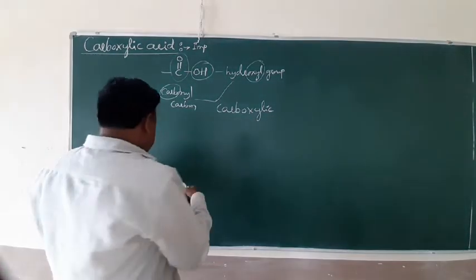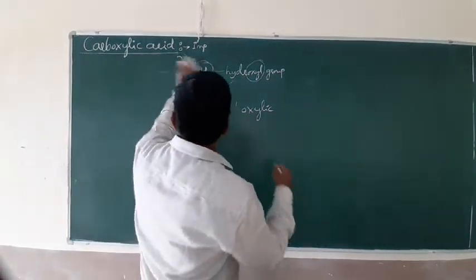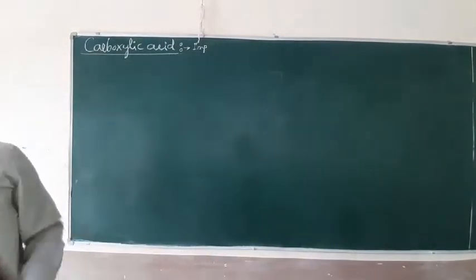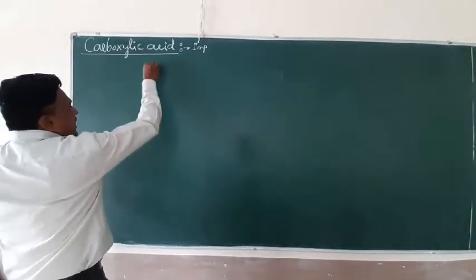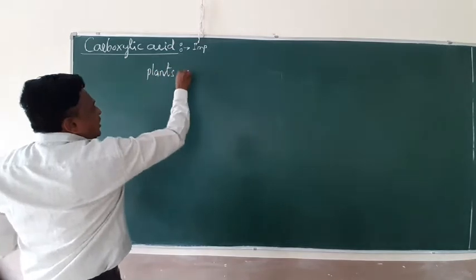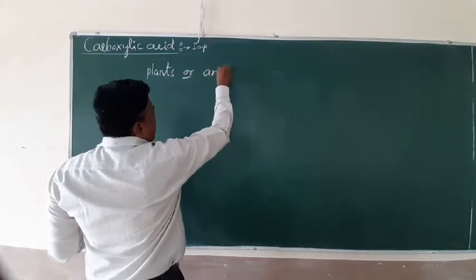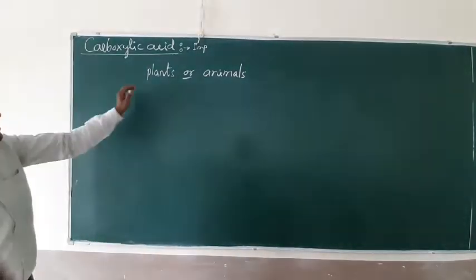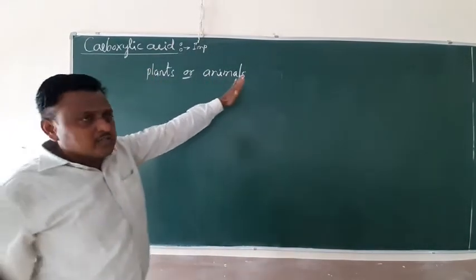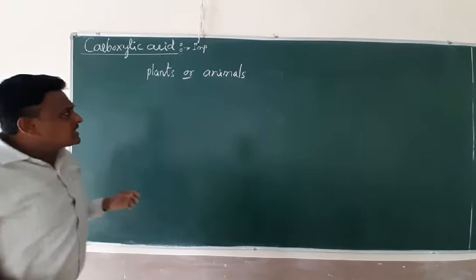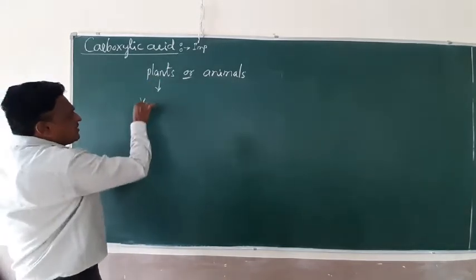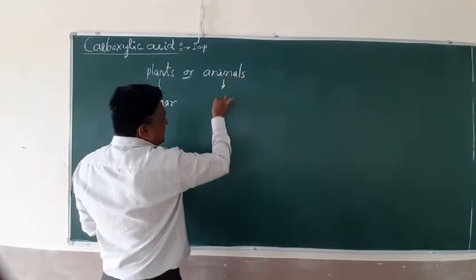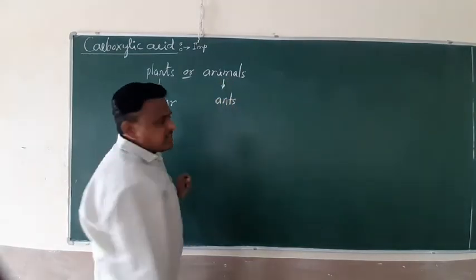And this carboxylic acid, I think all of you are quite familiar friends already. The carboxylic acids are the derivatives of either a plant or an animal. So you can have an example friends, I think all of you know, this is a vinegar, and this wonderful example is an ant, especially these red ants.